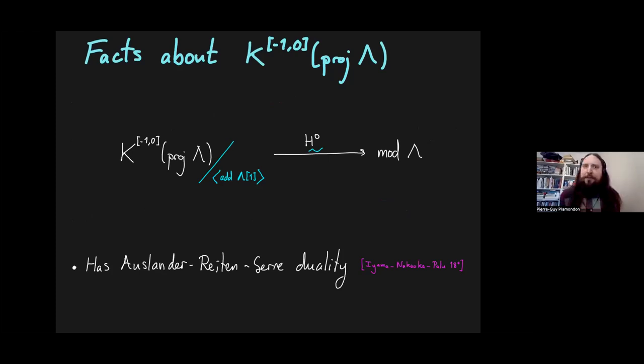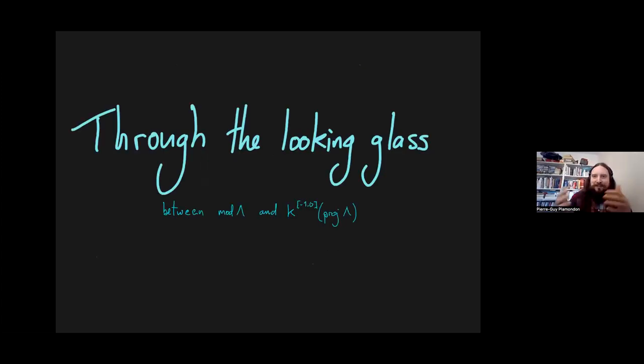So the theme of my talk is that these two categories, the category of projective presentations K[-1,0]proj, and the category of modules, kind of live on both sides of a looking glass. And you might want to cross that looking glass from one side to the other. When you do that, things become strange. Small things become large. Large things become small. Left things become right, and so on. So let's try and see why this is the case.